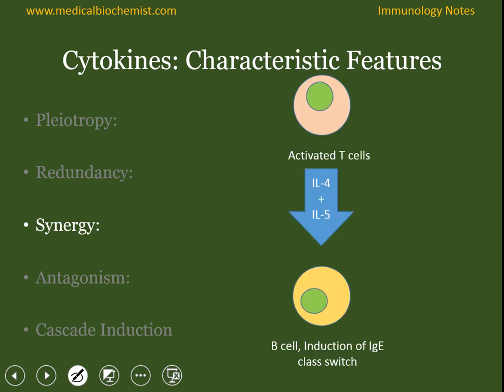Synergy occurs when two cytokines have a similar function and when they act in a concerted manner, that would amplify or exponentially increase their signaling capacity. For example, IL-4 and IL-5 both have receptors on B cells, and when these cytokines bind to B cells, they induce IgE class switching. When both are present together, they amplify that function.